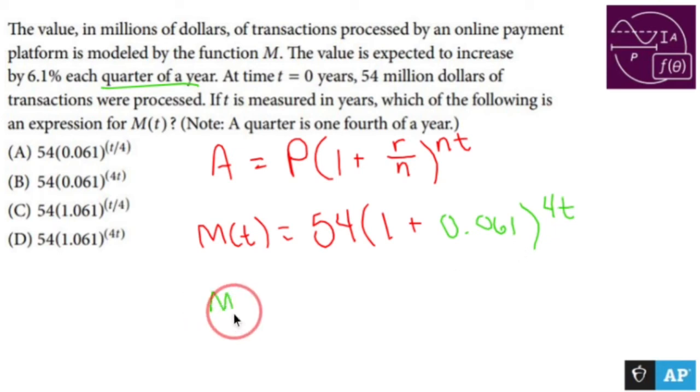Okay. When I combine everything, M(T) is going to equal 54 times 1 plus 0.061 is 1.061 to the 4T, which is D.